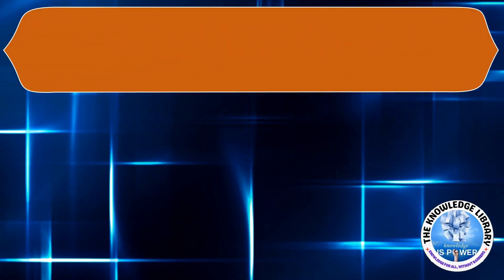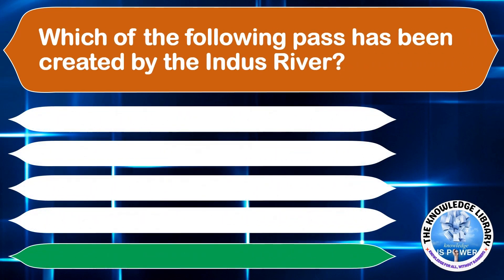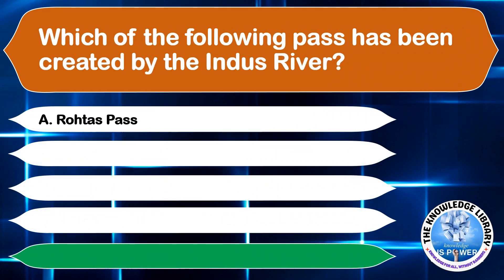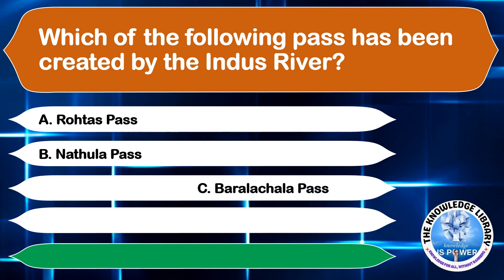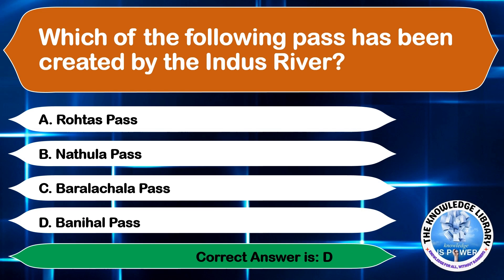Which of the following passes has been created by the Indus river? A. Rotas Pass, B. Natula Pass, C. Baracha La Pass, or D. Banihal Pass. The correct answer is option D, Banihal Pass.